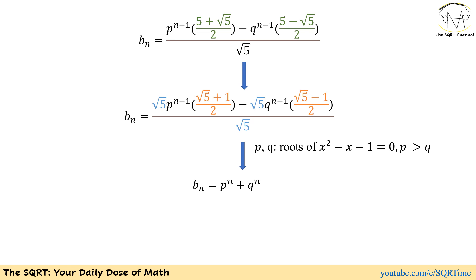If we cancel square root of 5 from top and bottom, we get something very interesting. We know that (square root of 5 plus 1) over 2 is P, so P to the power of n minus 1 times P becomes P to the power of n. Similarly, (square root of 5 minus 1) over 2 is Q, and Q times Q to the power of n minus 1 becomes Q to the power of n. So Bₙ can be written simply as P to the power of n plus Q to the power of n.